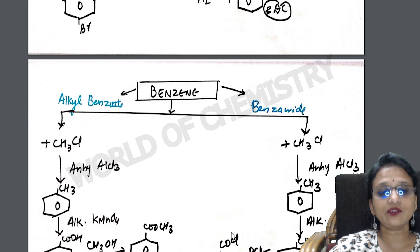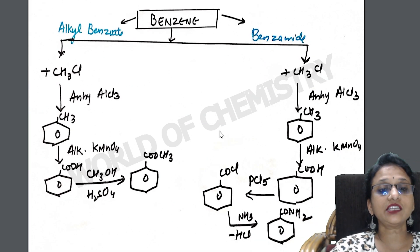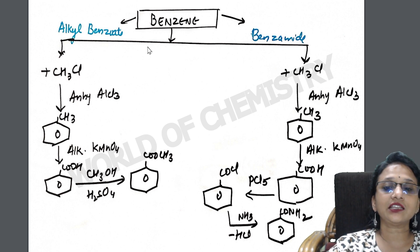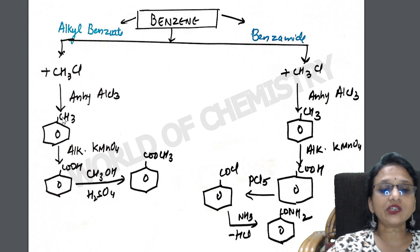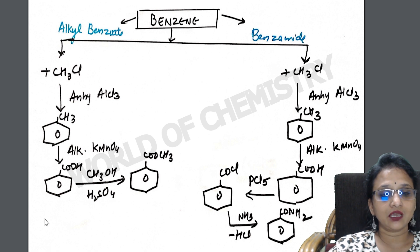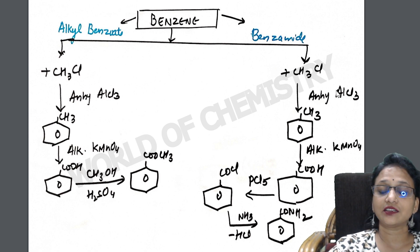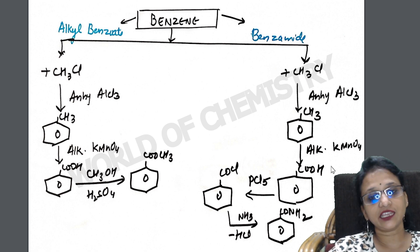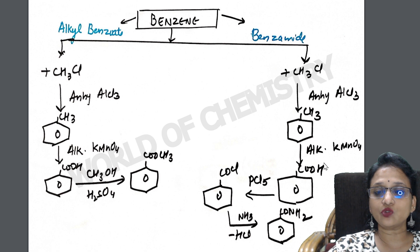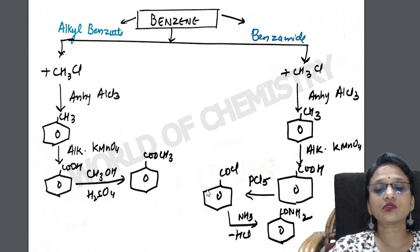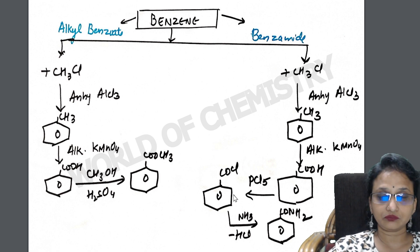Benzene to alkyl benzoate (ester) and benzamide: again do Friedel-Crafts alkylation to get toluene, then oxidation to get benzoic acid. For ester: esterification — acid plus alcohol gives ester plus water with a dehydrating agent. For benzamide: from benzoic acid, treat with PCl₃, PCl₅, or SOCl₂ to get benzoyl chloride, then introduce ammonia — HCl is released and you get the amide. Benzene to benzamide is done.